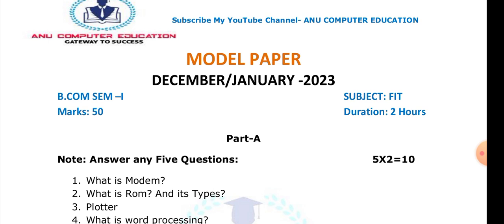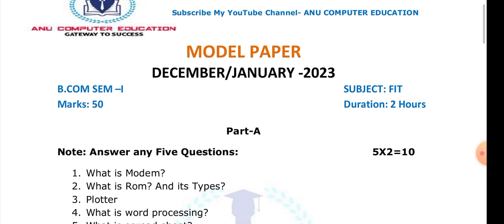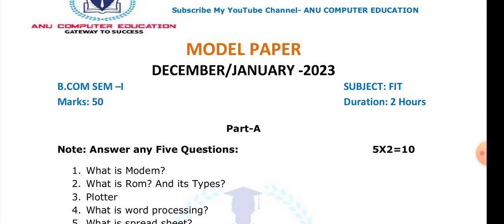The next question is: what is ROM and its types? ROM is nothing but Read Only Memory. The data stored in ROM is for reading purposes only — we cannot make any alteration in ROM. There are many different types: ROM, PROM, EPROM, EEPROM. You have to explain all these types.